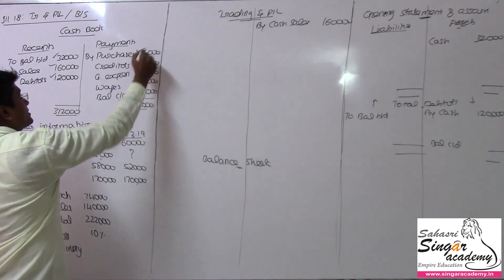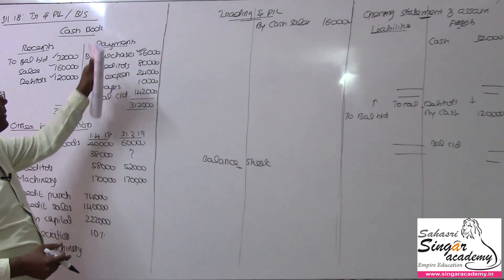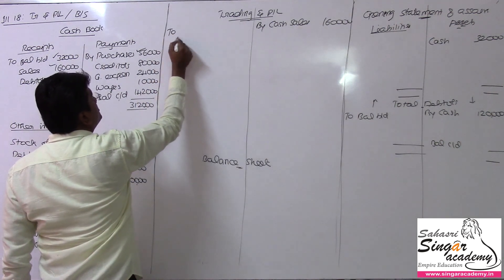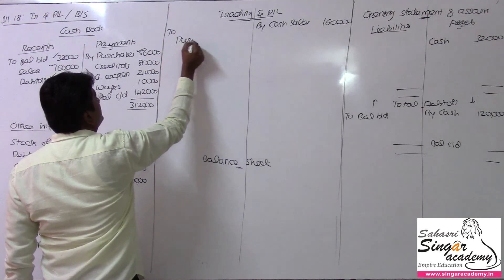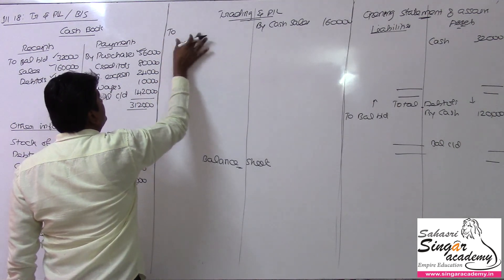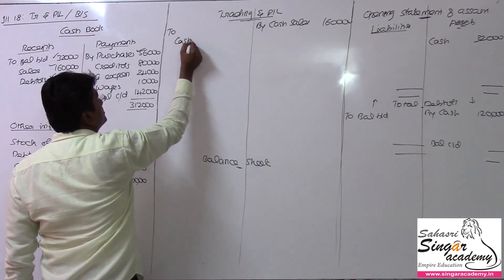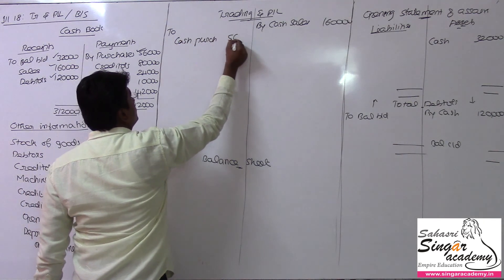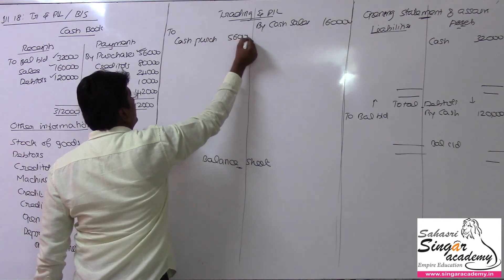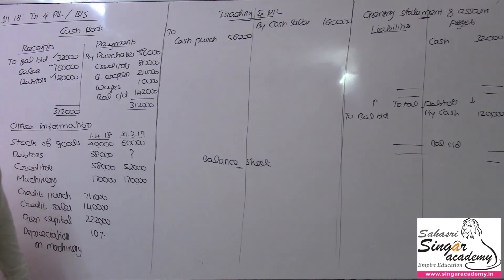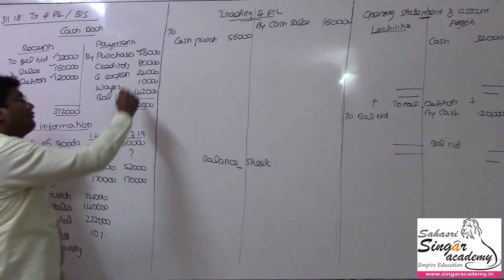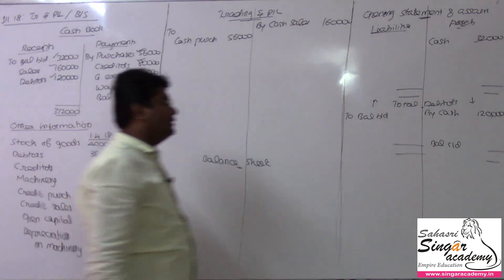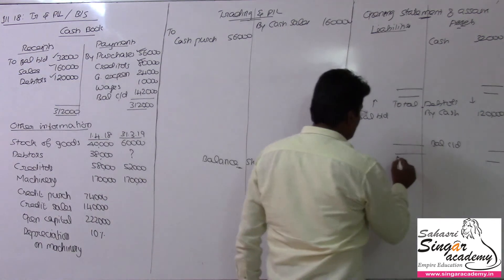For purchases: cash purchases payment will come in the cash book. Cash purchases value being 56,000 rupees. For creditors — creditors payments are recorded, so we need to open the Total Creditors Account as well.